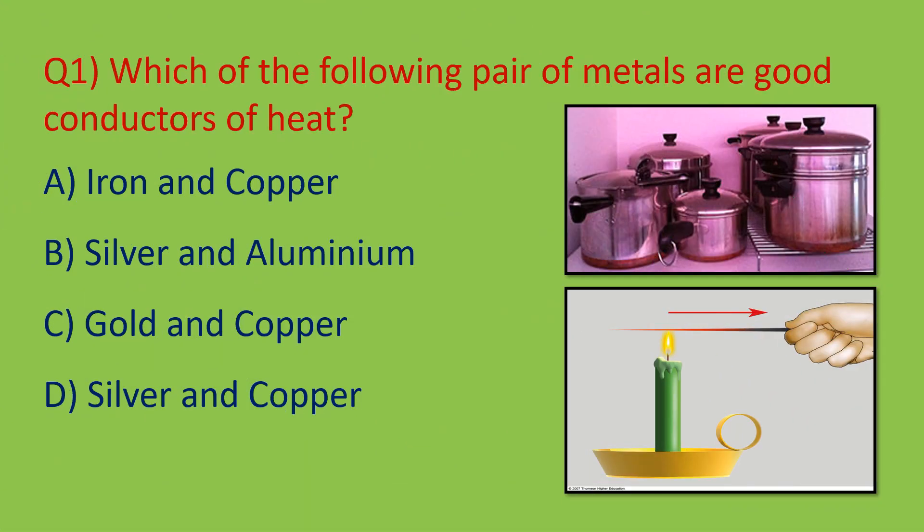Question number one: which of the following pair of metals are good conductors of heat? Generally all metals are good conductors of heat and electricity, but the very best conductors of heat are silver and copper. Because of this property, copper is used in making cooking utensils — usually the bottom of vessels is coated with copper.